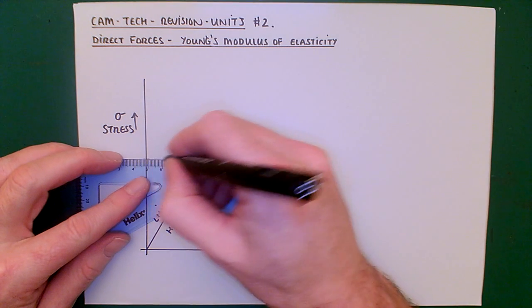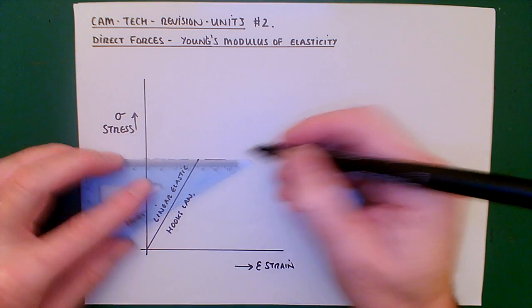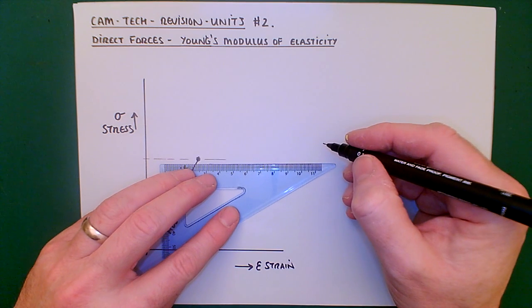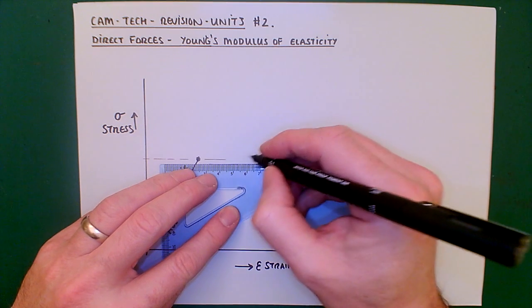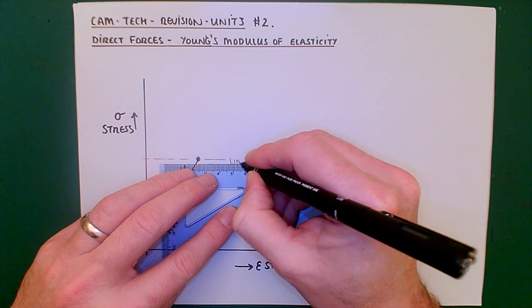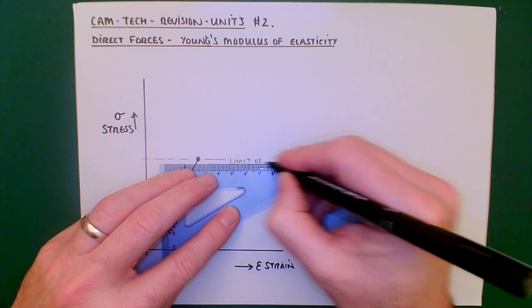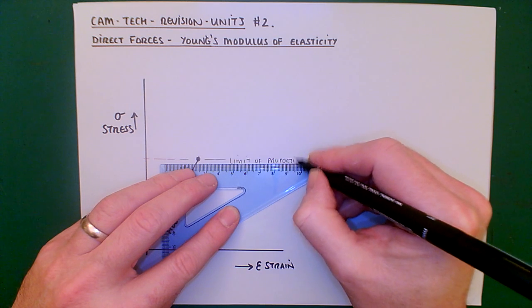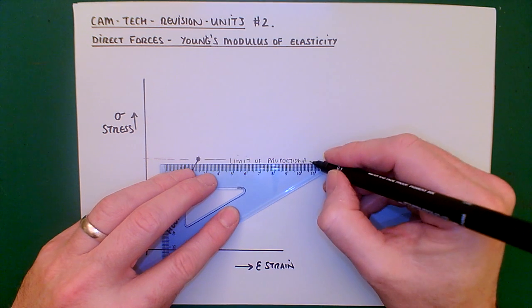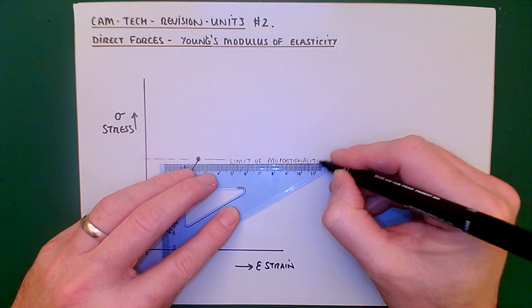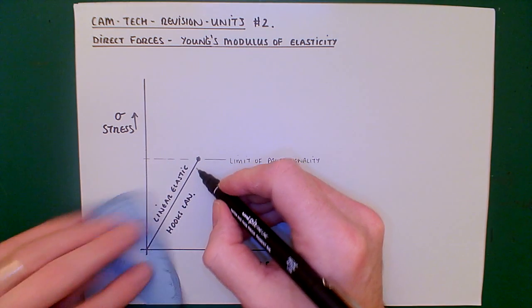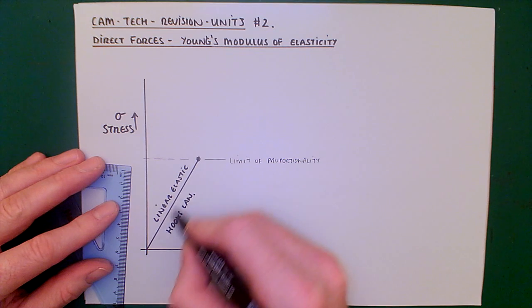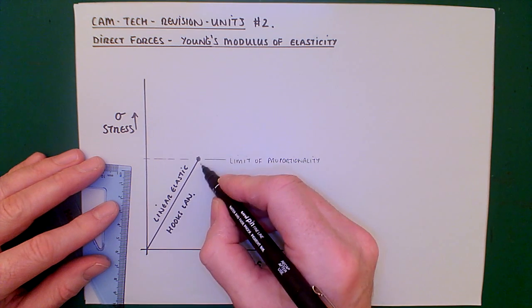First of which is, there is a region which is reached where we have the limit of proportionality. This is the limit. At the moment, you've got stress going up in a linear in response to the strain. So they are directly proportional.